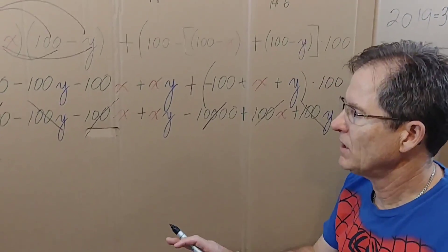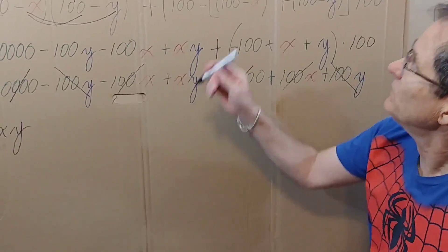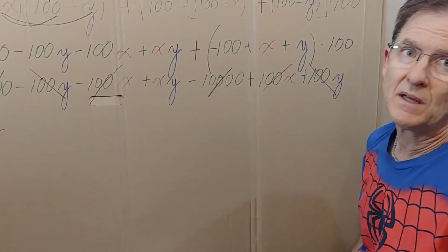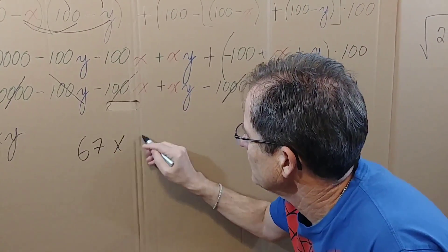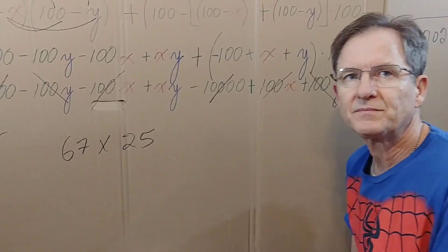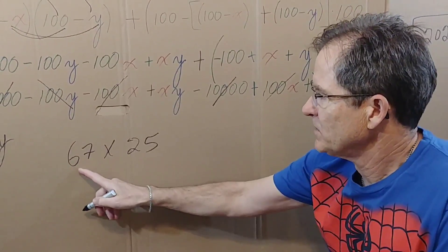So let's say we have 67 times 25. Subtract 67 from 100, you get 33. Subtract 25 from 100, you get 75.